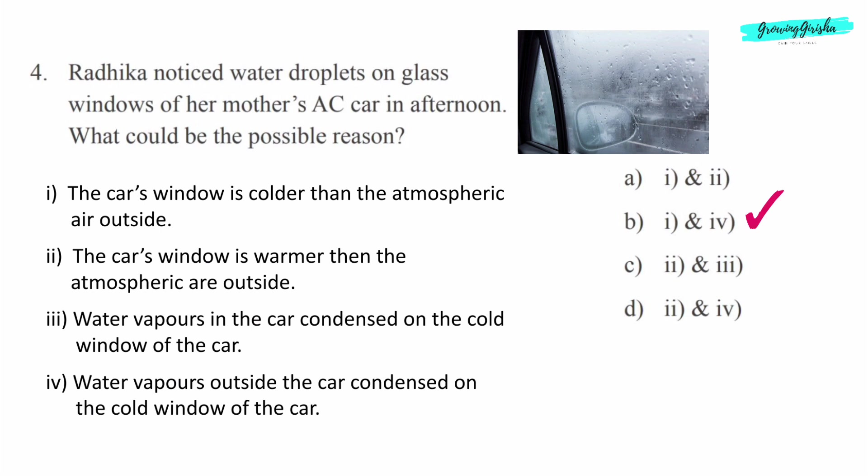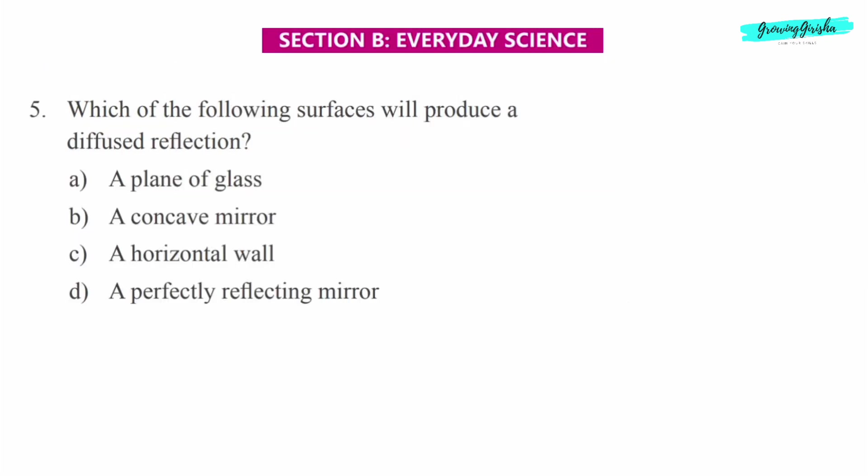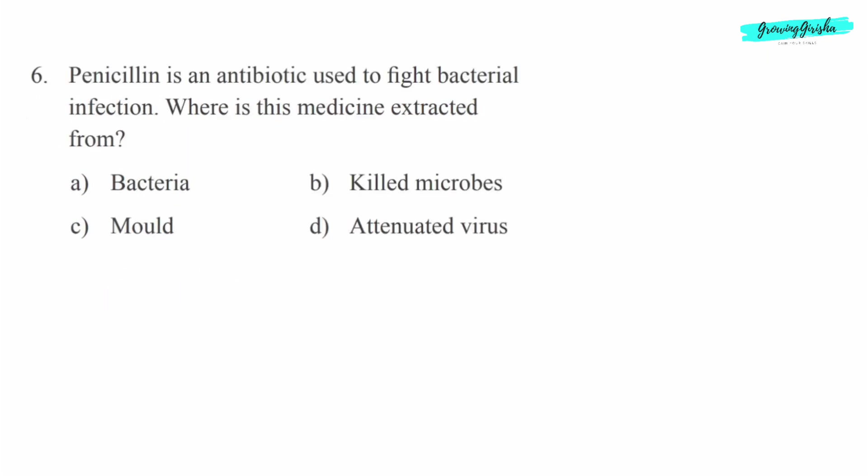Option B, first and fourth. Section B: Everyday Signs. Question 5: Which of the following surfaces will produce a diffused reflection? Option C, a horizontal wall. Question 6: Penicillin is an antibiotic used to fight bacterial infection. Where is this medicine extracted from?